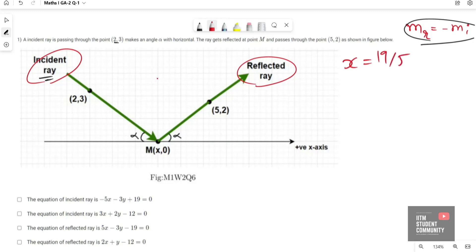Now we got the value of x equals 19/5. Seeing the options, we have to calculate equations of both the lines - reflected ray and incident ray. We got the value of M as (19/5, 0).